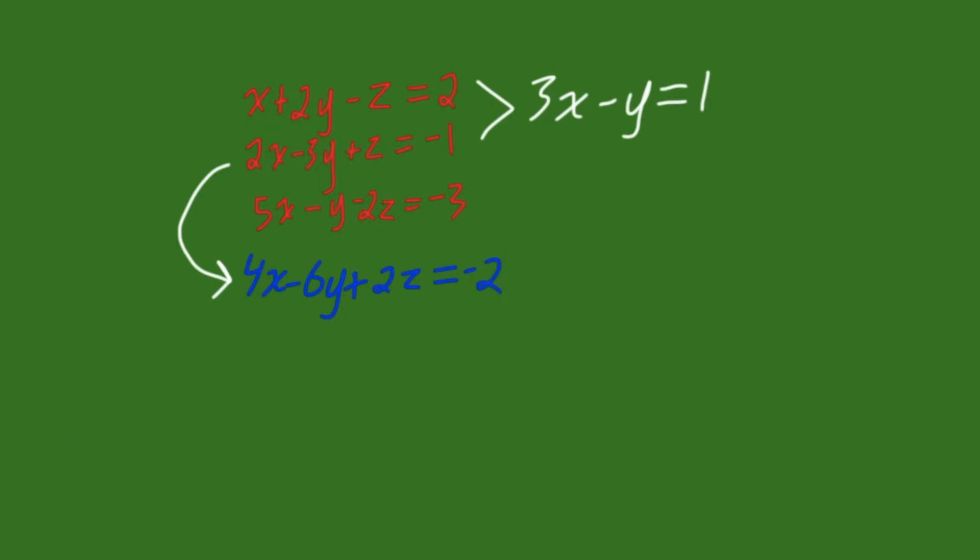Now that we have done that, both of our z's have the same number in front, where one is negative and one is positive. Meaning, we can easily add these two equations together to eliminate z. So, if we do that, we get a new equation here of 9x minus 7y equals minus 5.